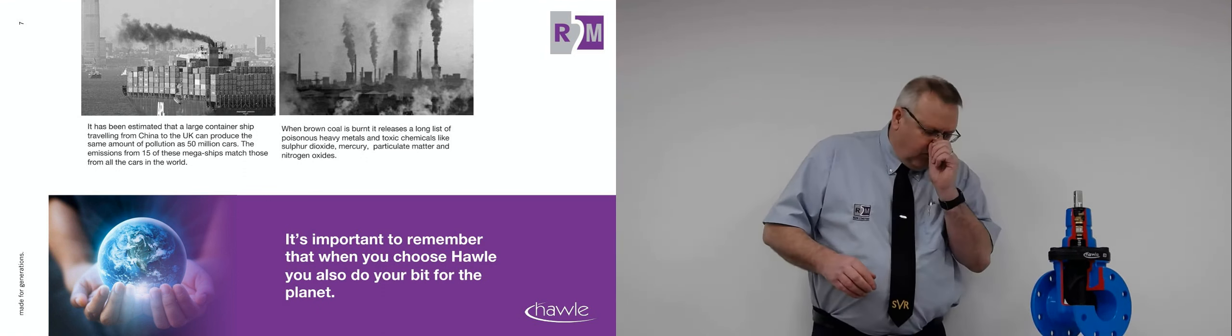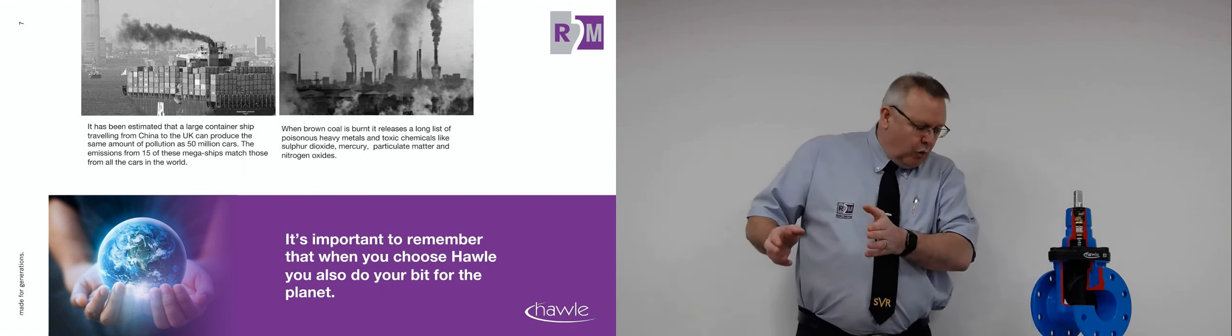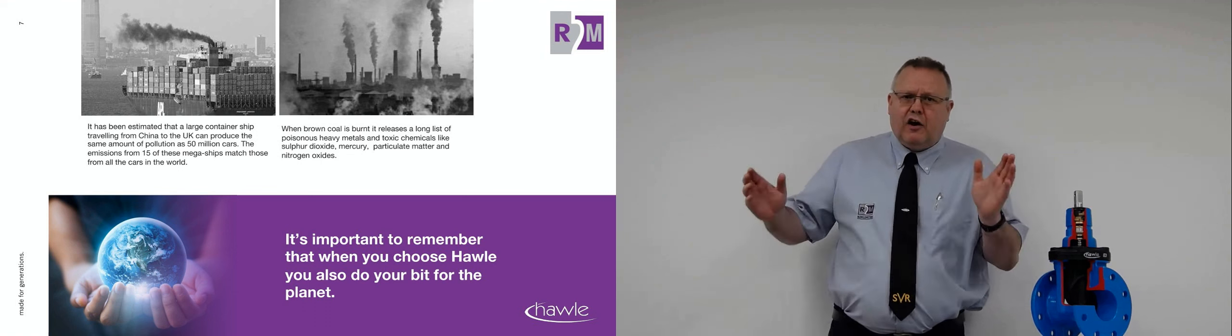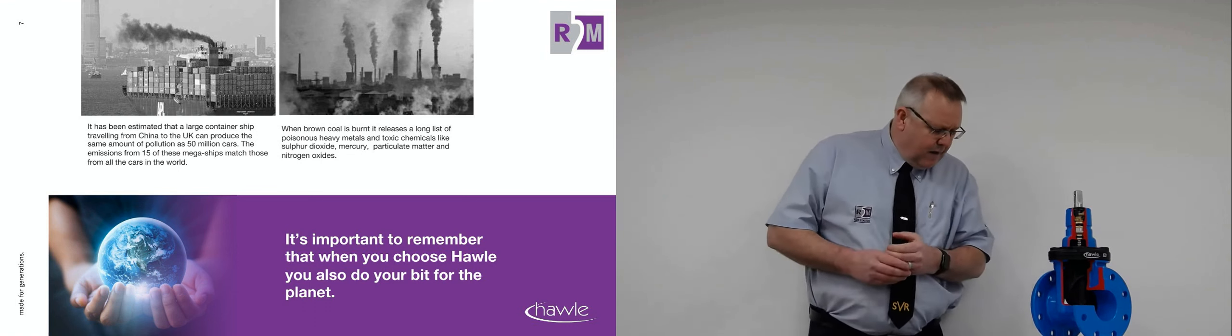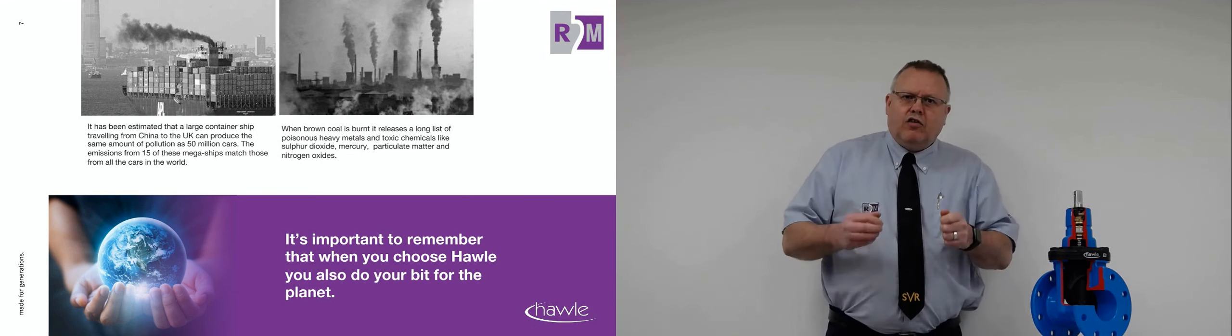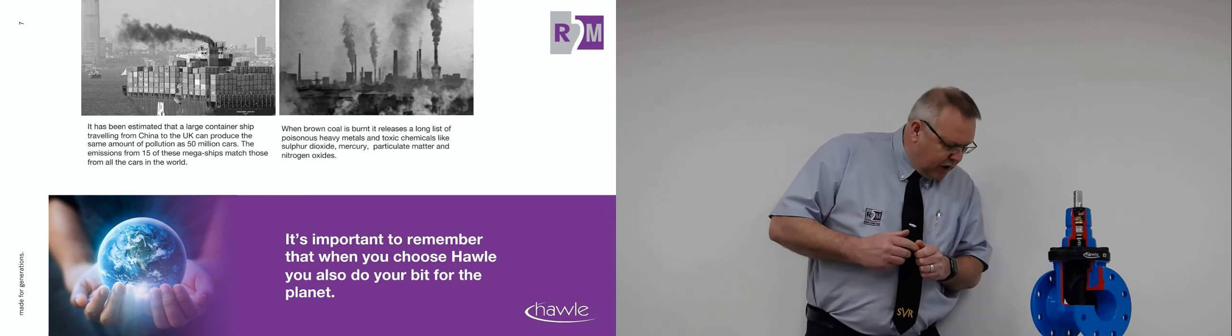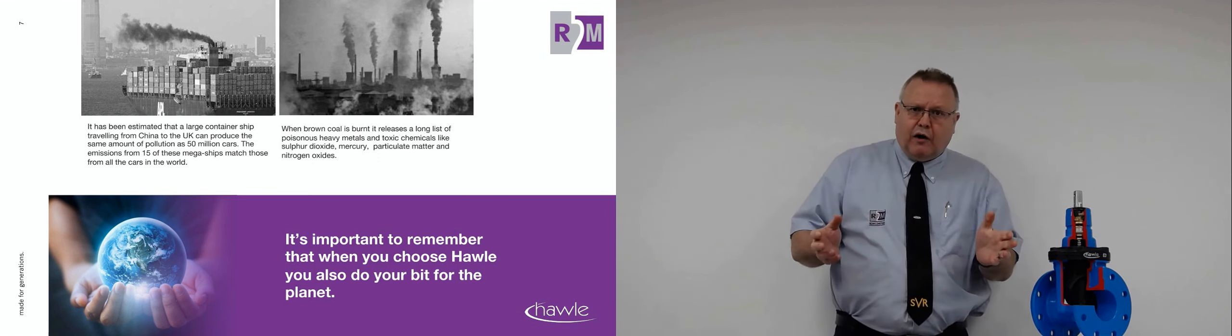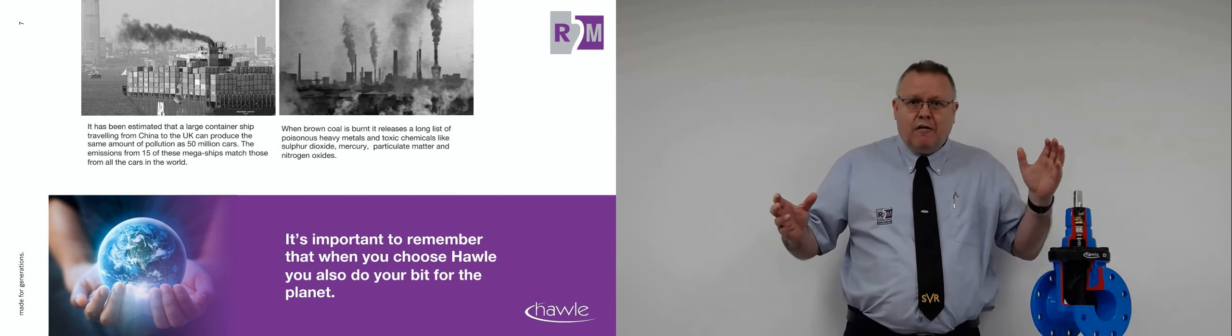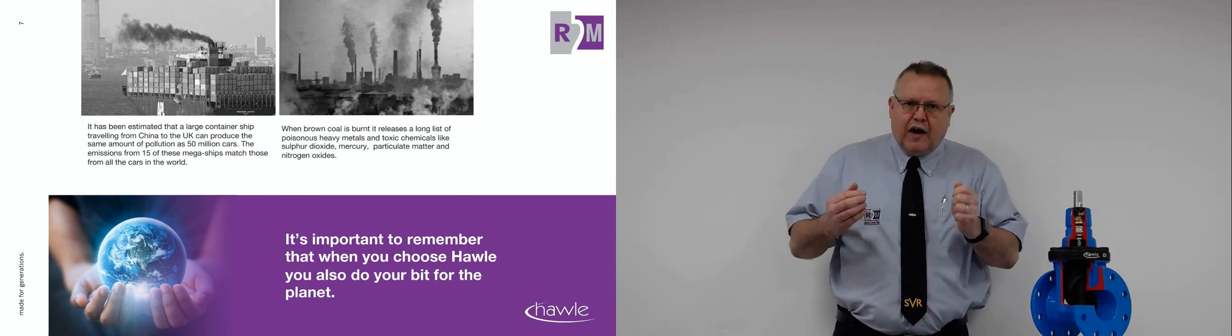So for instance, let's just look at how we get the products into the UK. We've all seen these big cargo ships that are coming over. Each one of these cargo ships puts out the equivalent to 50 million cars in pollution. And I believe that 15 of these super cargo ships would be equivalent to all the world's cars. So 15 ships coming from Asia into the UK would produce that much pollution.